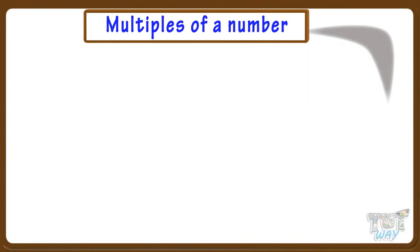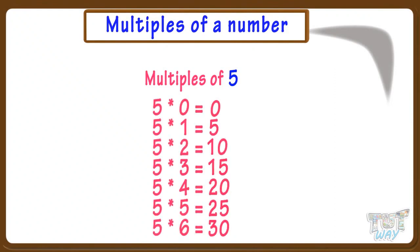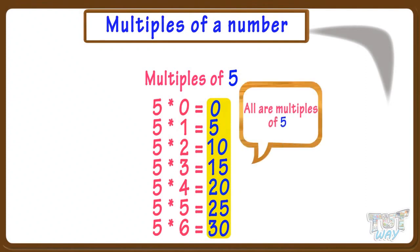We have a number, 5. What are its multiples? Numbers obtained by multiplying 5 with any number are its multiples. So 0, 5, 10, 15, 20, 25, 30, and so on. All the numbers that come in a multiplication table of 5, or step counting by 5, are its multiples.